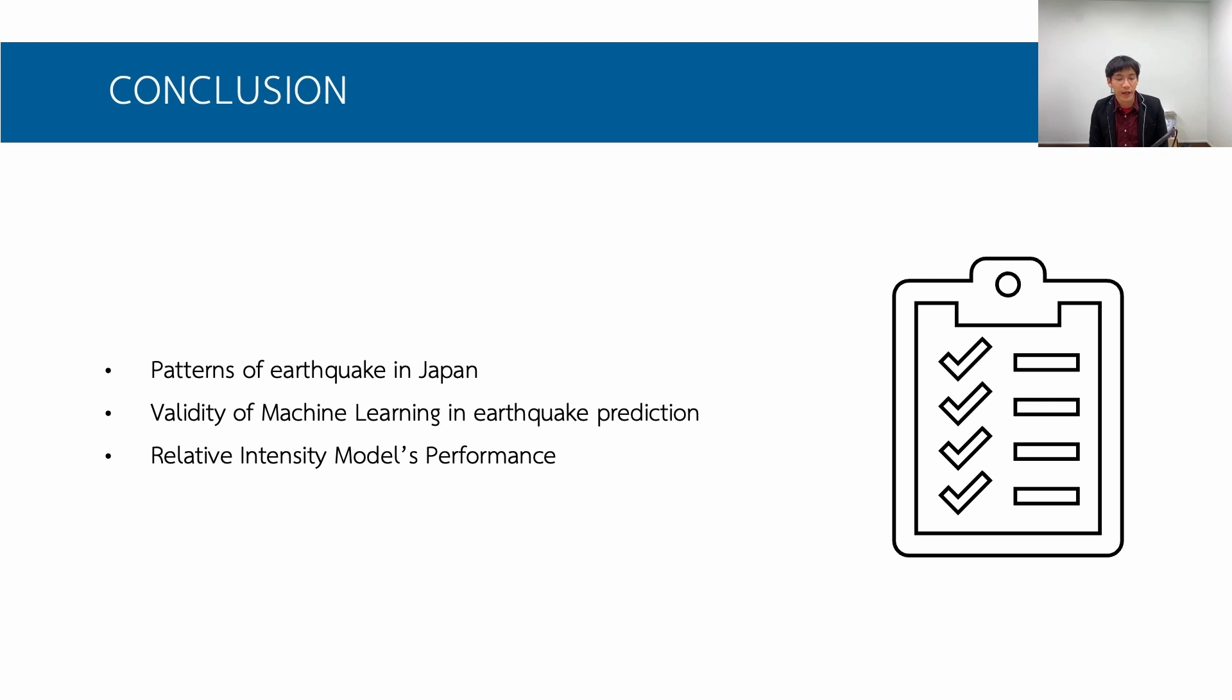Conclusion. We can conclude that earthquake in Japan has patterns and can be analyzed using various methods. Second, the validity of machine learning in earthquake prediction. From our simple and straightforward model, we can regress earthquake data with significance, which means that there is a promising future in machine learning used to analyze earthquake data. The next one is relative intensity model performance, which is a good way of risk assessment and I think the model performed very good.